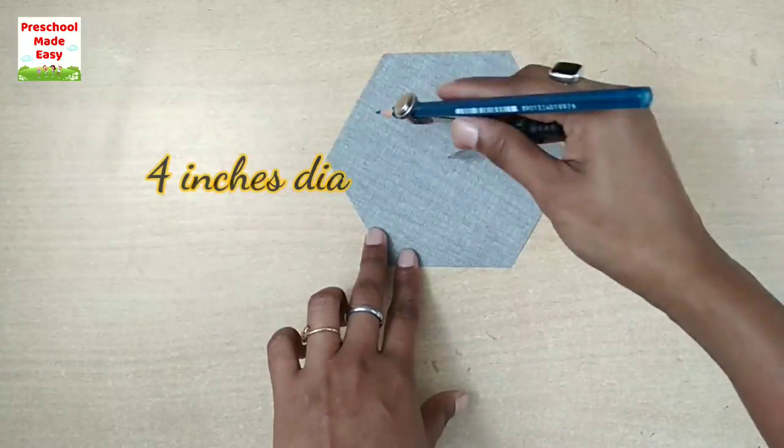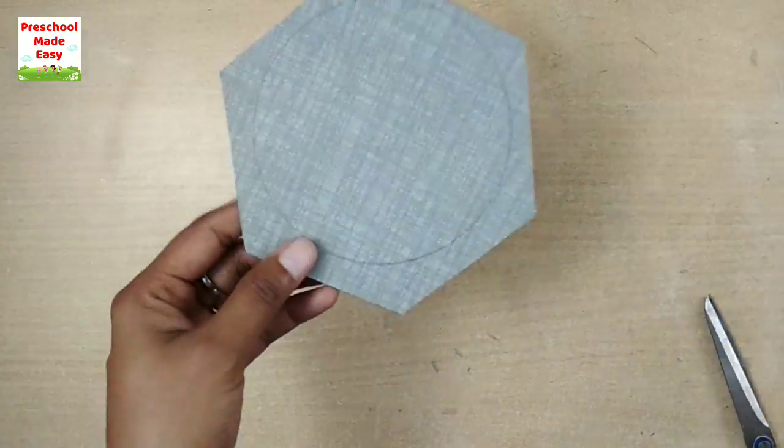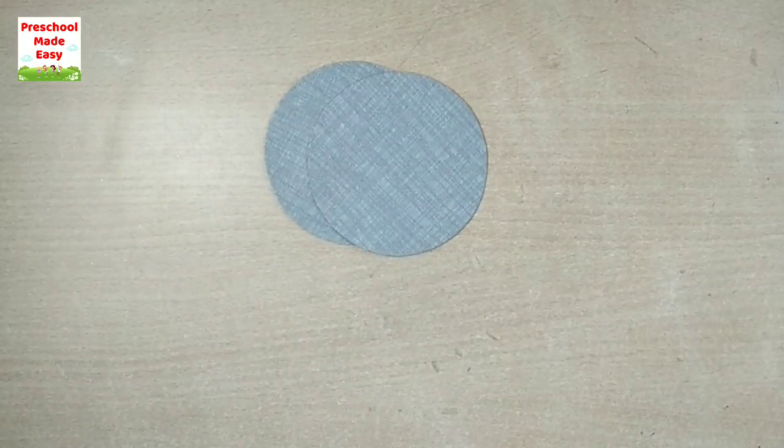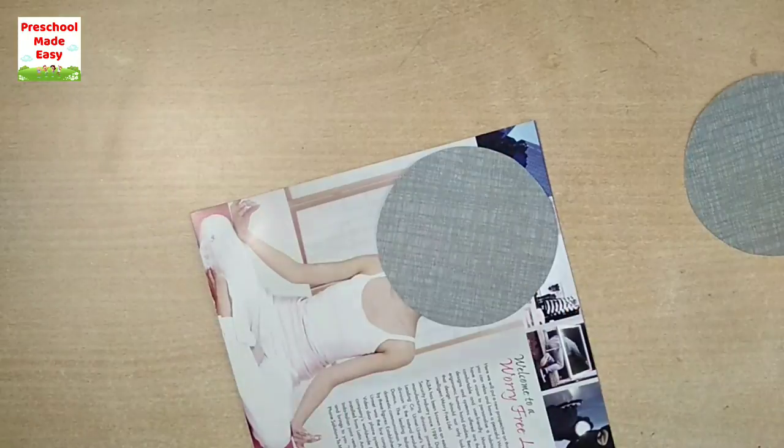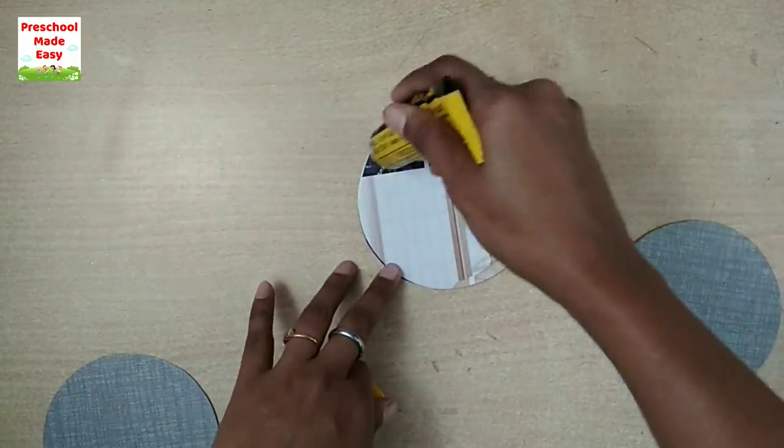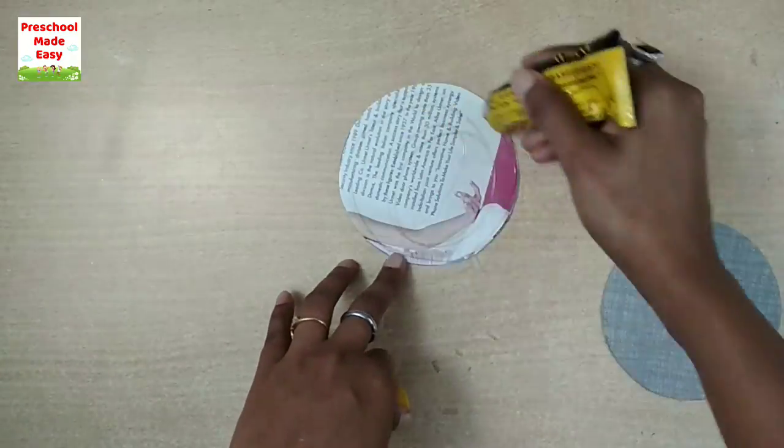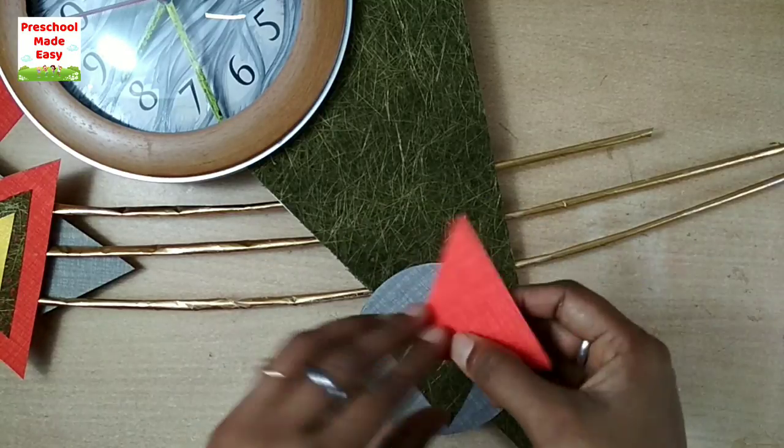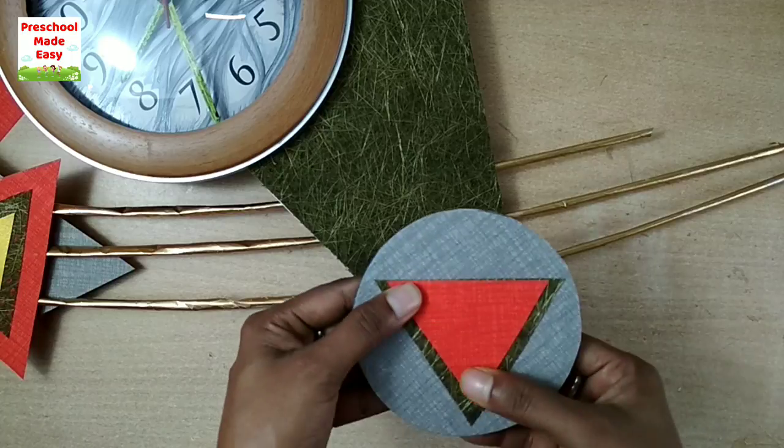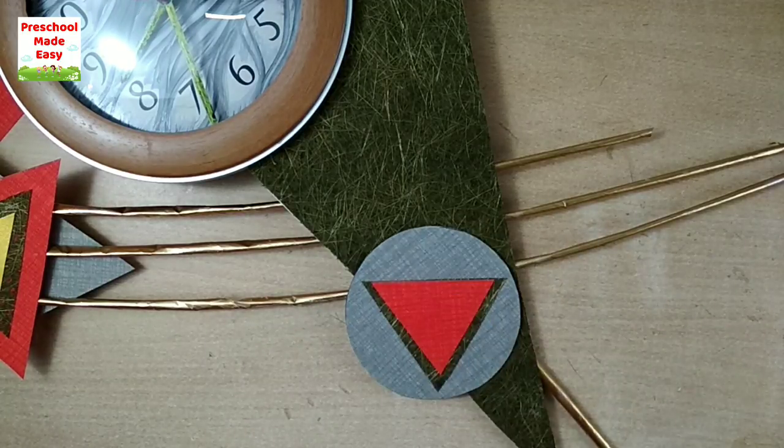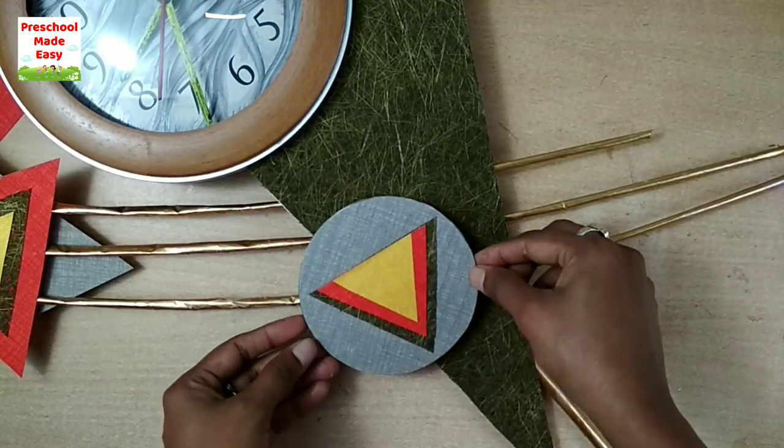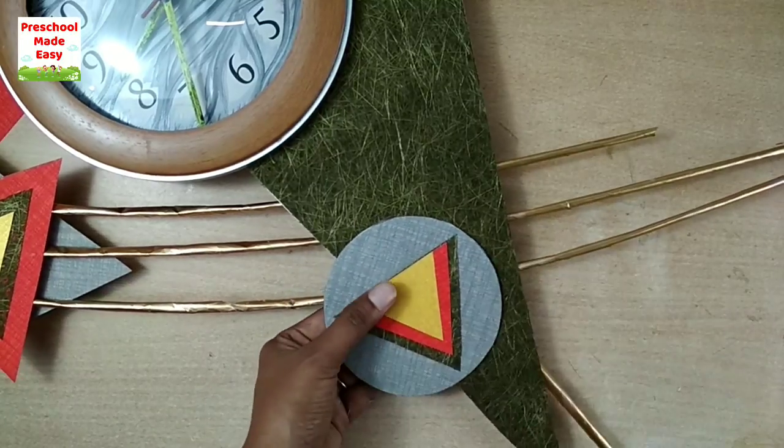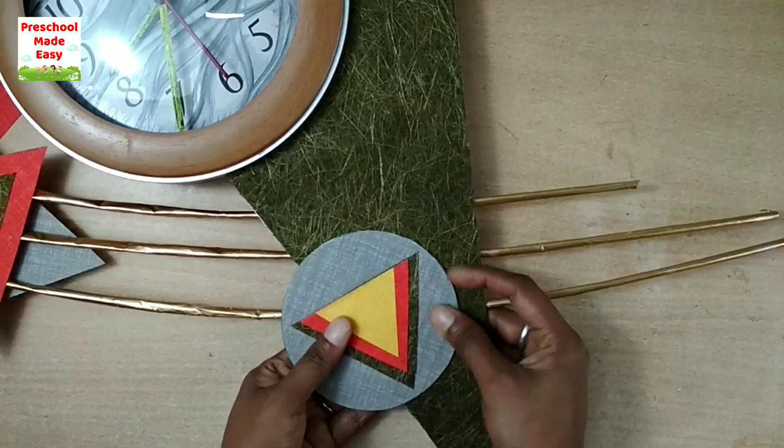From this gray paper, I am cutting the circle. To make it strong, I will stick a cardboard in the ring. I am sticking a green triangle, red, and yellow triangle.